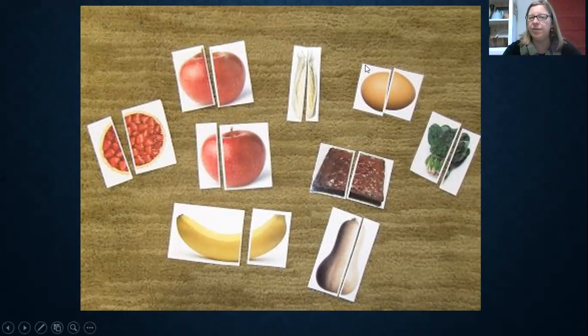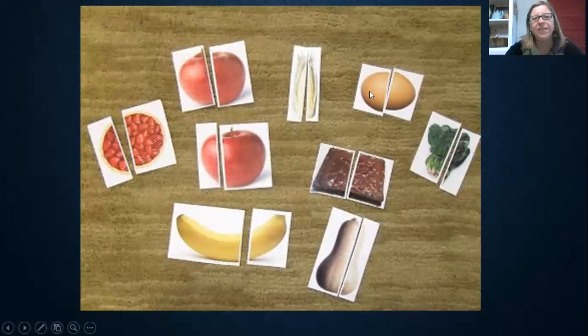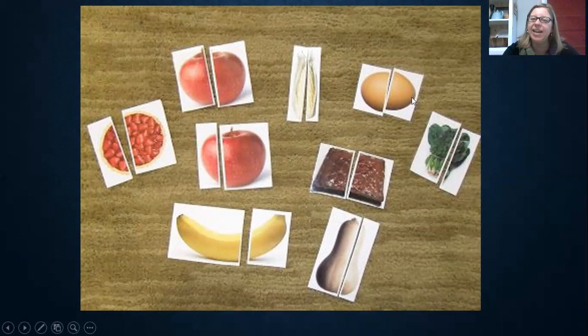How about this corn on the cob? Right again. Yes. They are equal parts. And this egg? It's hard to tell because one side of the egg is kind of more narrow than the other, but it does look like it is split in half. Yes.